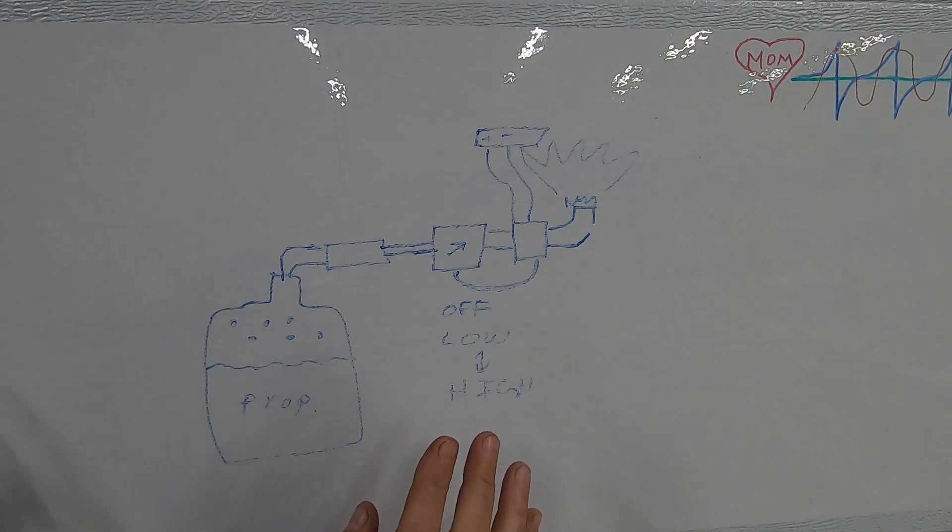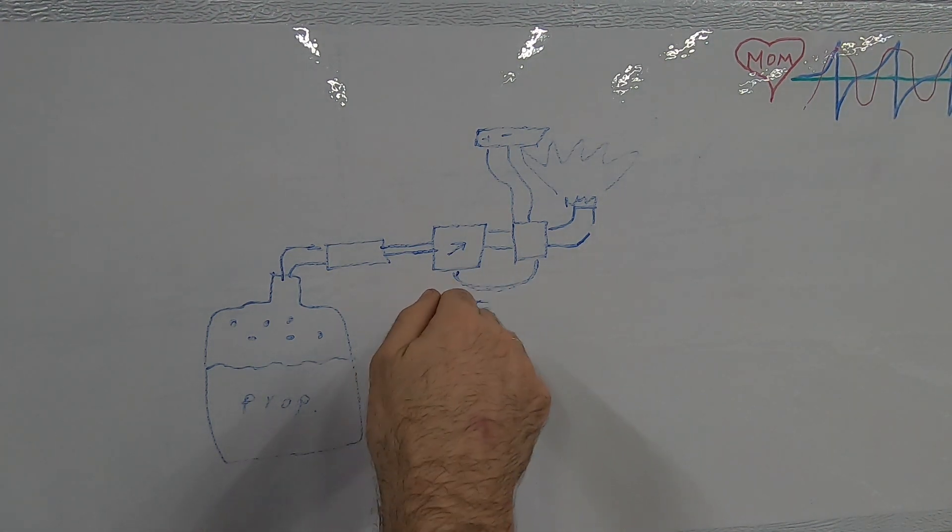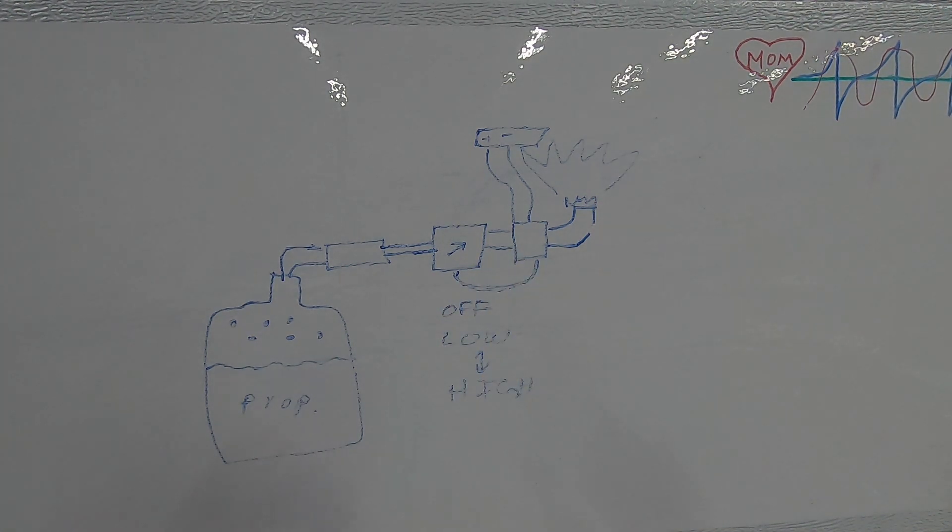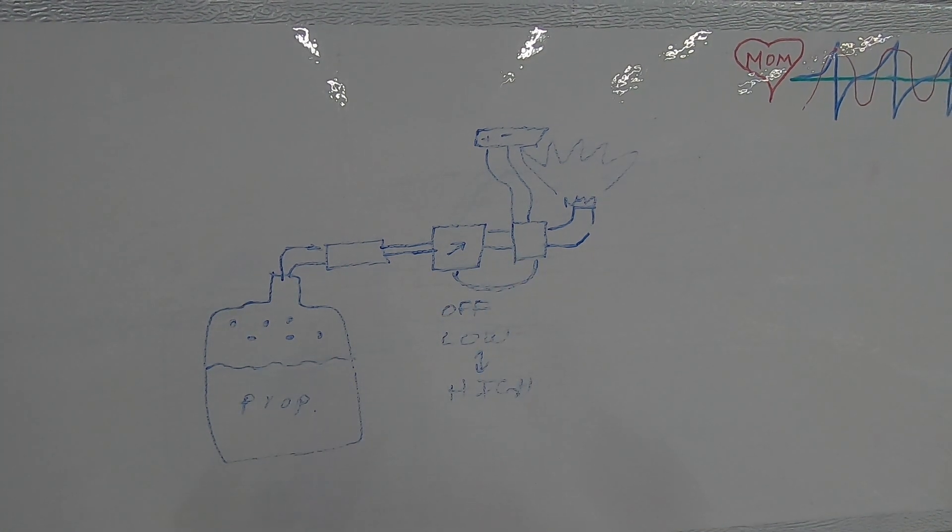What we were experiencing was we could push the knob in, ignite it and light the flame and it would run fine. But as soon as you let your hand off, the fuel would shut off and the flame would go out. So let's go take a look.